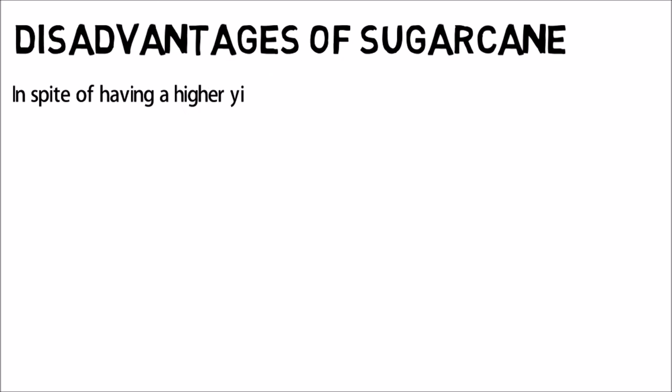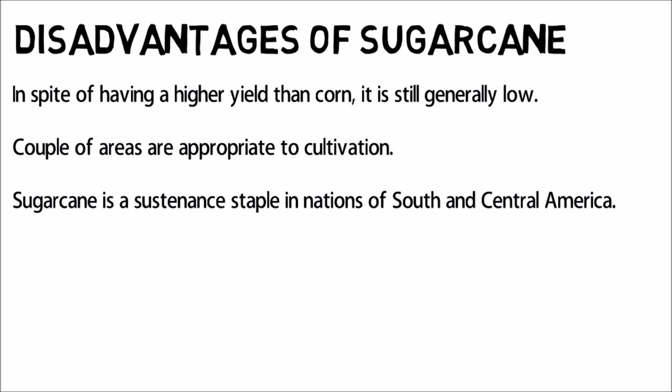The disadvantages of sugar cane include: In spite of having a higher yield than corn, it is still generally low. Couple of areas are appropriate to cultivation. Sugar cane is a sustenance staple in nations of South and Central America.